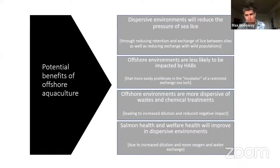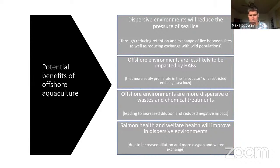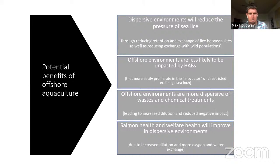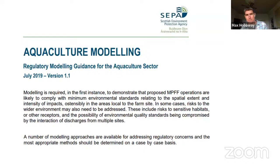There are a number of hypothesized benefits to moving offshore. More dispersive environments will generally reduce the pressure of sea lice. Offshore environments are less likely to be impacted by harmful algal blooms, are more dispersive for waste and chemicals, and salmon health and welfare will improve. These are all hypotheses — this is where the OffAqua project came in to quantify them. The cost-benefit analysis is that operation in more exposed offshore environments is obviously a lot more challenging, so we've got to weigh up the pros and cons.